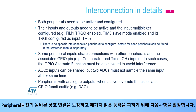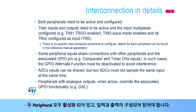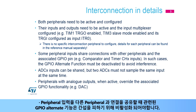These recommendations should be followed to ensure proper interconnection between peripherals and avoid unexpected behaviors. Both peripherals need to be active and their inputs and outputs configured. When peripheral inputs share connections with other peripherals, associated GPIO alternate functions must be deactivated to avoid interference.